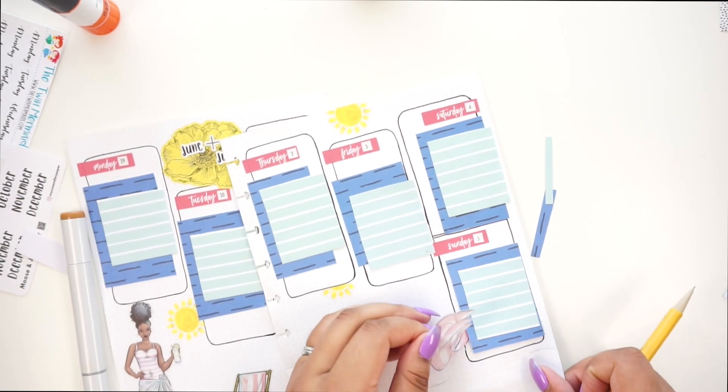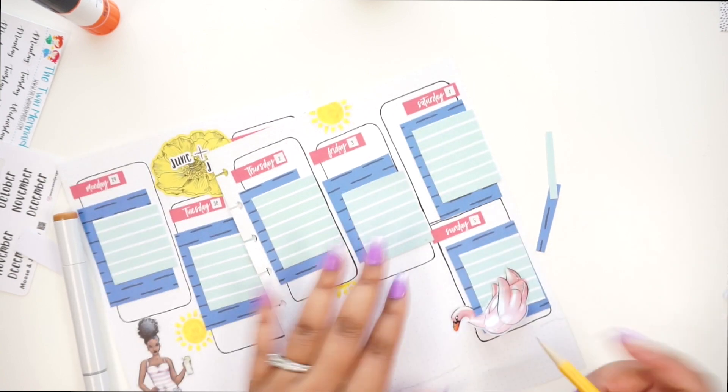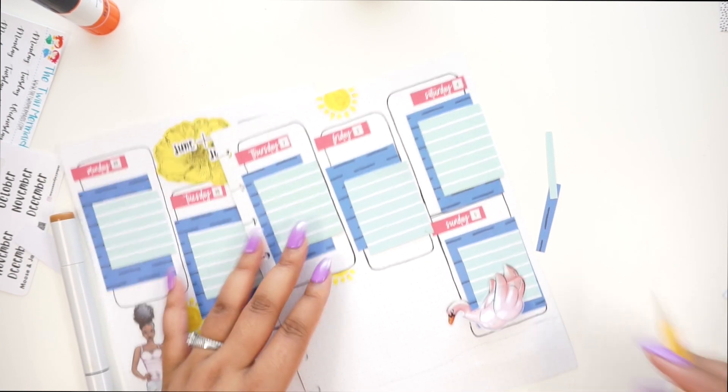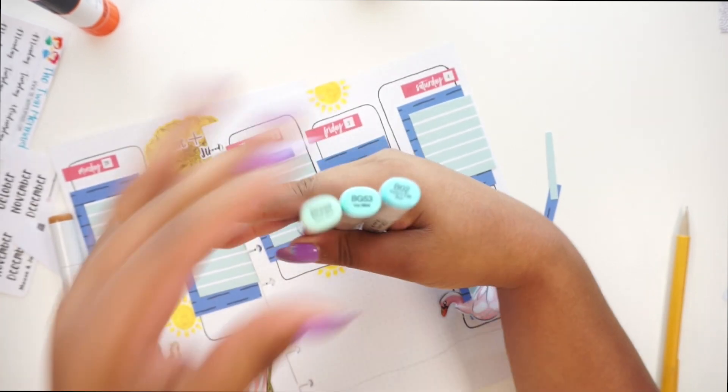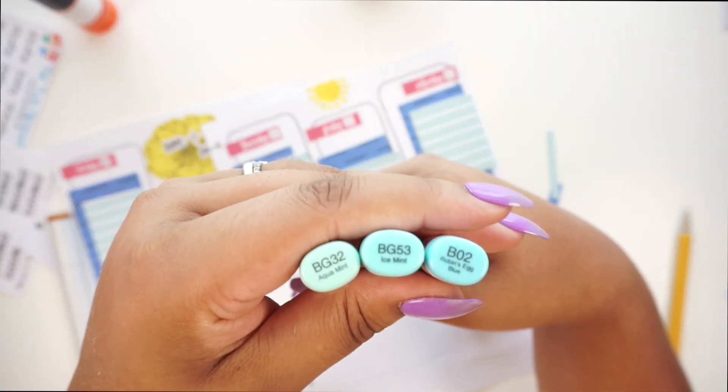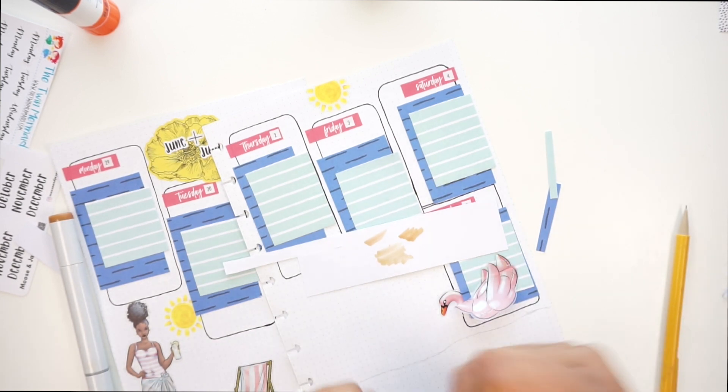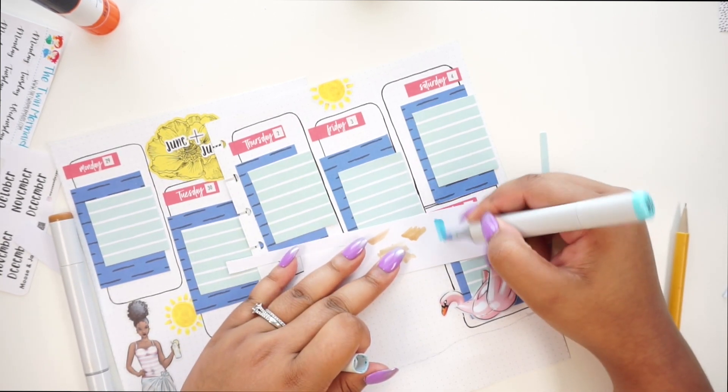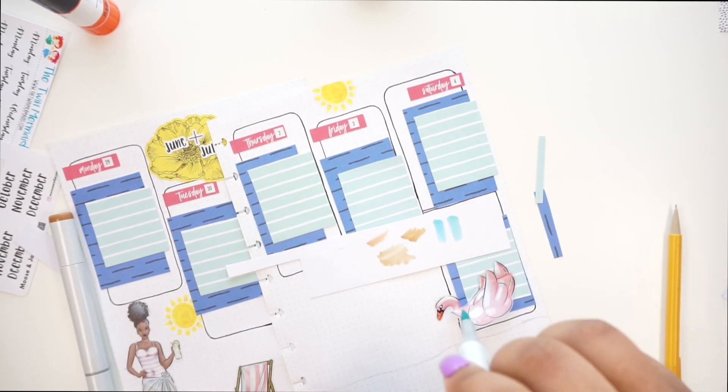So I'm going to pull this up while I do that. Just put it like that. Let me go get some blues. I have these colors here. I have Aquamint, Ice Mint, and Robins Egg Blue. Let me test those out. Okay, I kind of like that one a lot. That is Ice Mint.